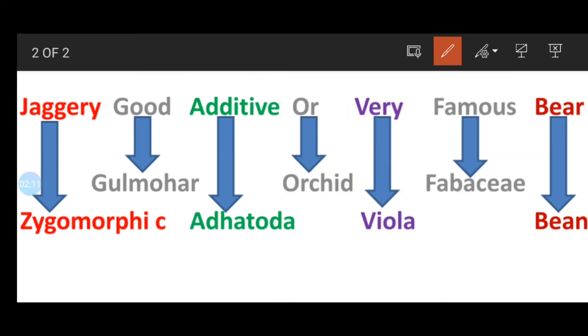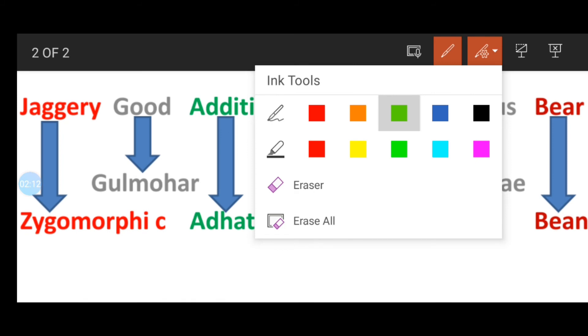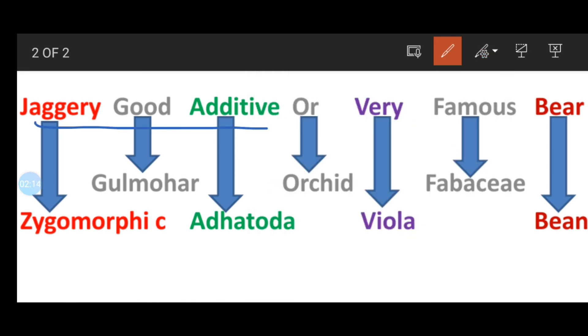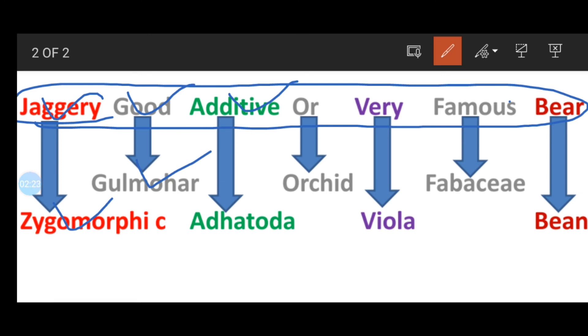So I am going to repeat again you can see. Jaggery good additive very famous bean. Jaggery stands for zygomorphic. Good stands for Gulmohar. Additive stands for Adhatoda. Or stands for orchid. Very stands for Viola and famous stands for Fabaceae. Bean that is the bean.